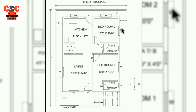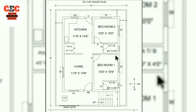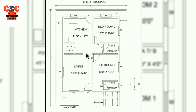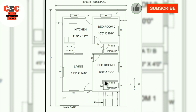A ventilator of size 2 feet by 2 feet is provided for both bathrooms. For all windows, a sunshed of 1 foot wide is provided. The outer walls are 9 inches thick. For the puja room and both bathrooms, 5-inch thick walls are provided. I hope I covered every part of the plan.